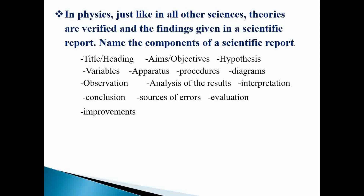A scientific report also includes diagrams showing how the experiment is arranged, observations made during the experiment, analysis of the results collected, interpretation of the analyzed results, and conclusions. You also need to point out sources of errors, evaluations, and possible improvements during report writing and experimentation.